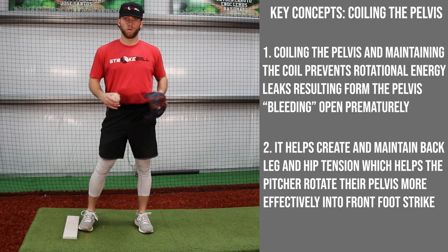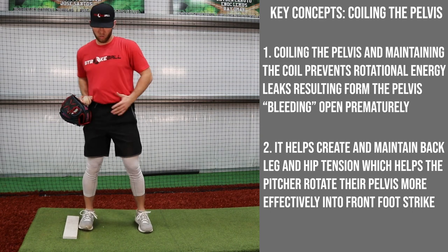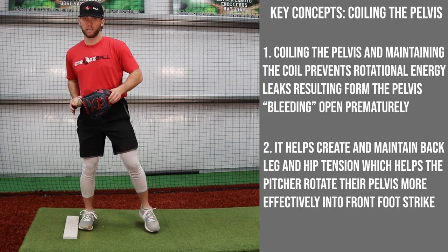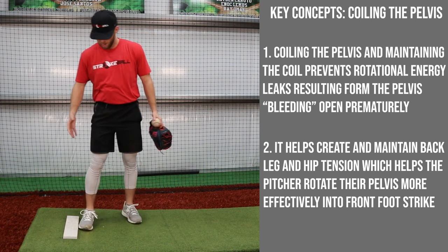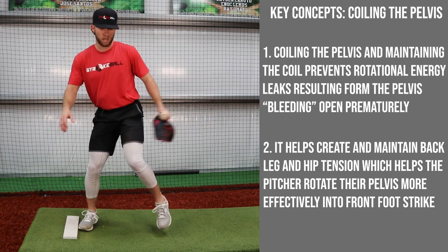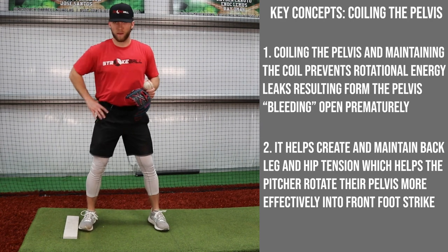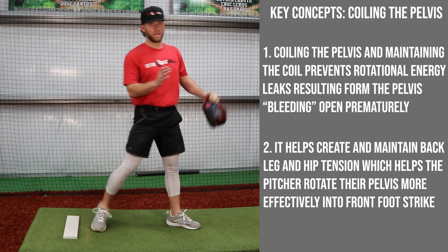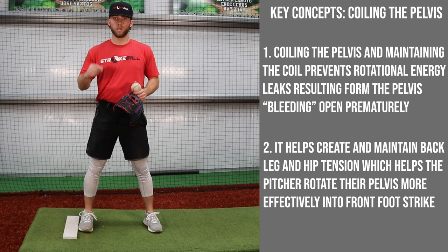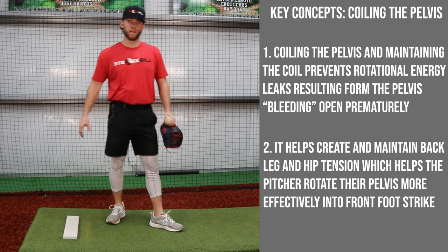Number two, another reason why pelvic coil is important is the idea of back leg and back hip tension. If we begin to lose the pelvic coil and aren't keeping tight, that's going to cause energy leaks and we won't have anything stable with our back leg to rotate against. If you're all loosey-goosey when you go to rotate, it's going to be a much weaker rotational move into front foot strike because you don't have a solid, sturdy foundation to push against. By integrating pelvic coil, we integrate that back leg and hip tension that gives us a strong foundation to rotate into front foot strike with.